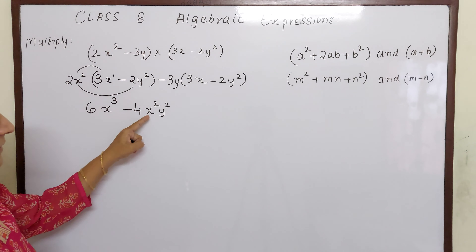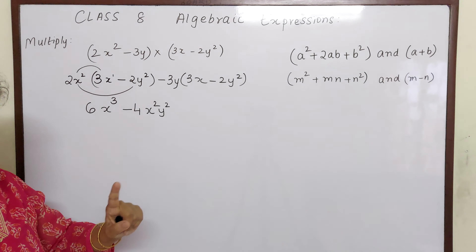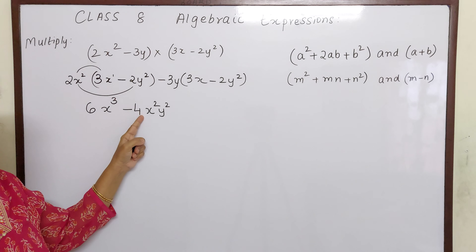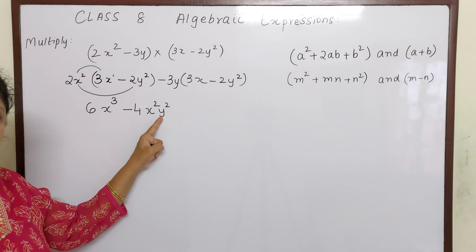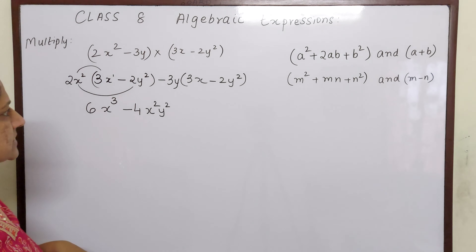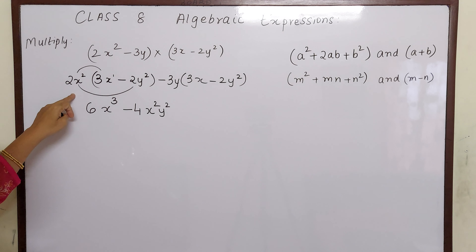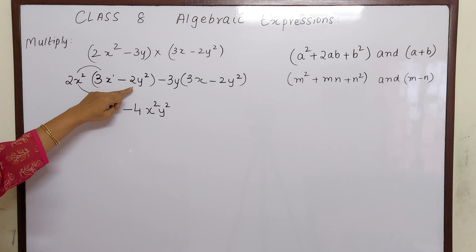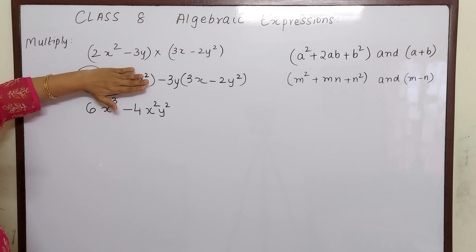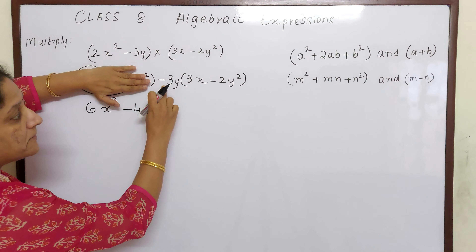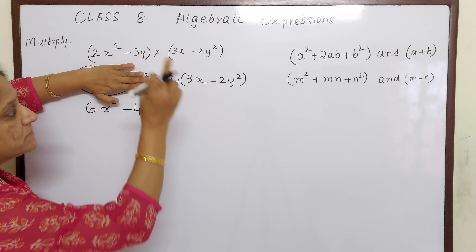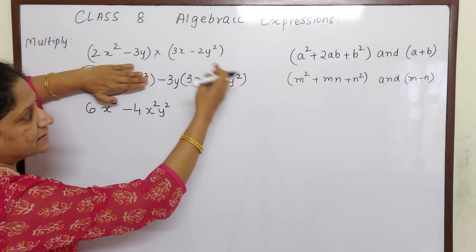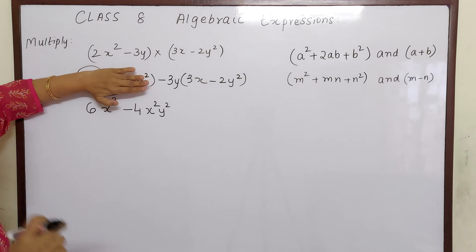We cannot write xy⁴ because the base should be the same for that. Here the base is x, here the base is y, so we have to write it separately. So we multiplied 2x² with 3x and 2x² with 2y². Now we have to multiply minus 3y with 3x, and multiply minus 3y with minus 2y². Signs are important.